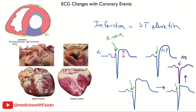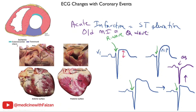So acute infarction results in ST elevation, but after some time you develop Q waves. The presence of Q waves indicates absence of electrical signals in that area, suggesting an old myocardial infarction — though it is hard to tell how long ago it happened. That is why many cardiologists use the term indeterminate age or age unknown, to indicate that Q waves are present but we don't really know how long ago the infarction occurred.